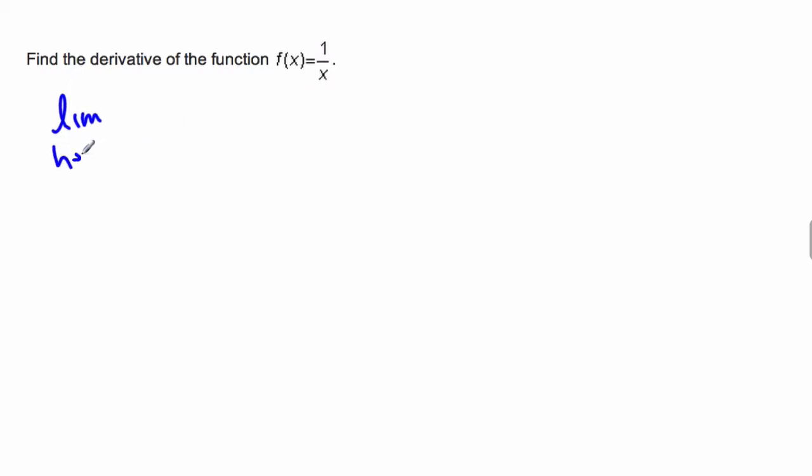This is the limit as h approaches 0 of f of x plus h minus f of x, all divided by x plus h minus x, which is essentially y2 minus y1 over x2 minus x1, so it's slope. You can see that the x's will cancel, so we're just left with h, but this is nothing more than the slope formula between two points that are infinitely close together on the same curve, which in this case is 1 over x.